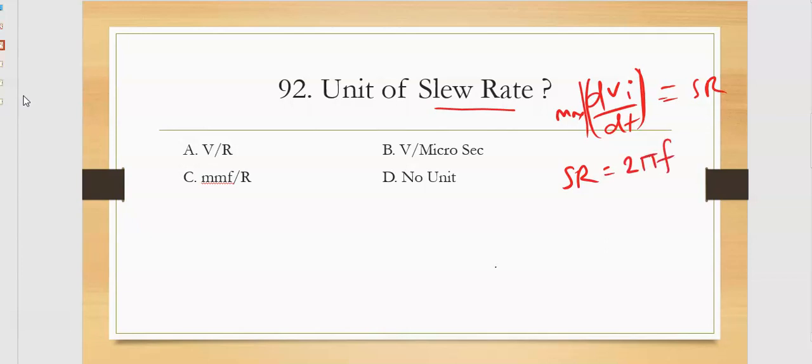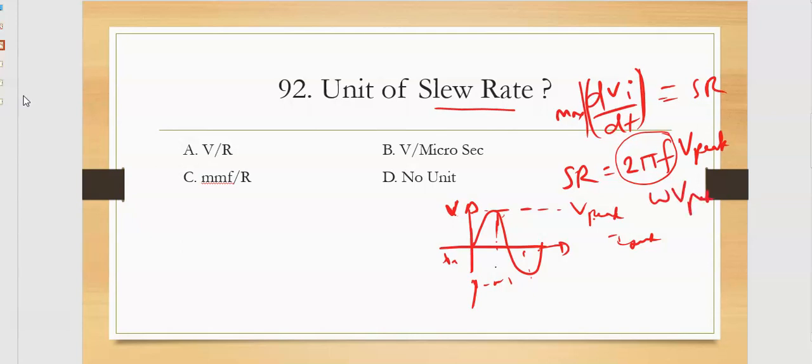Slew rate is called as 2πf times V-peak. V-peak is the peak of the sine waveform. This is y-axis, this is x-axis, this is V-peak. So the formula: slew rate is 2πf times V-peak, and this unit will be volts per microsecond. Slew rate is infinity for ideal case, for ideal op-amp case.